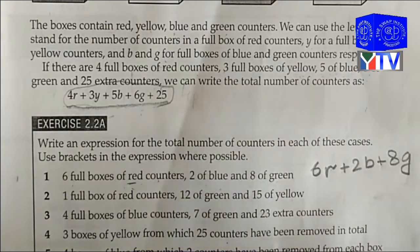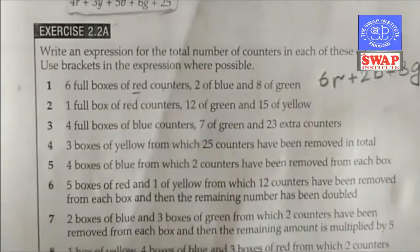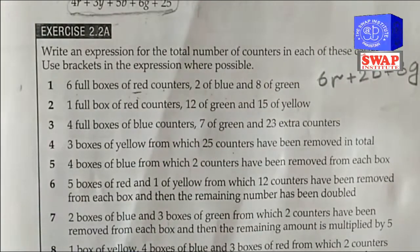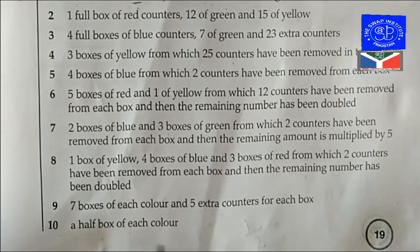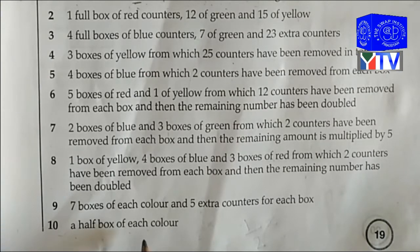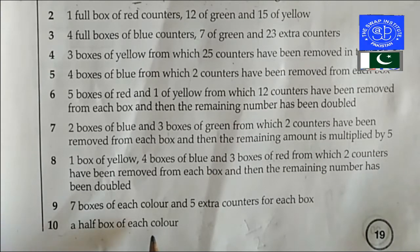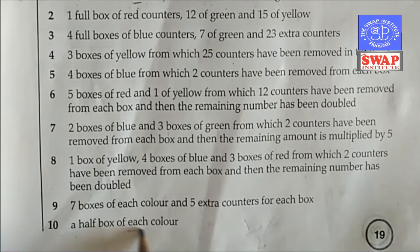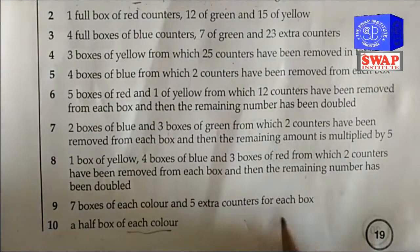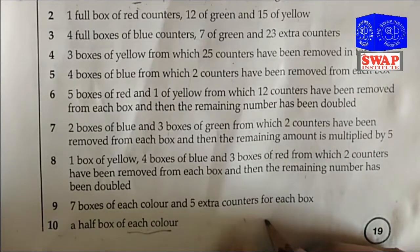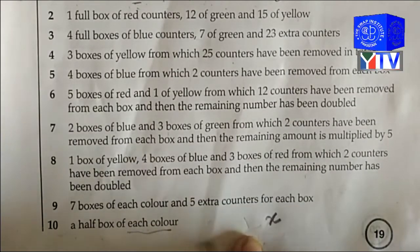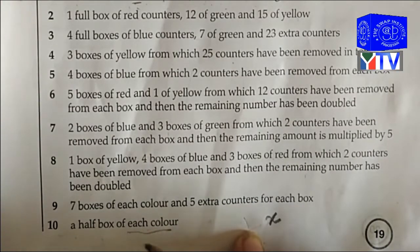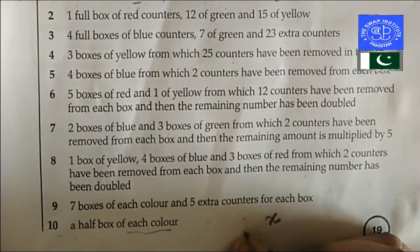The next ones are similar and you can do them on your own. I will explain the last one: a half box of each color. Now I don't know how many colors there are, so I will write x instead of any color or any number. So a half of x means half of that unknown quantity.